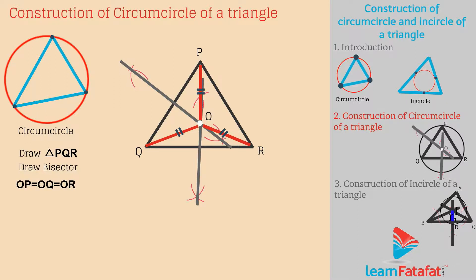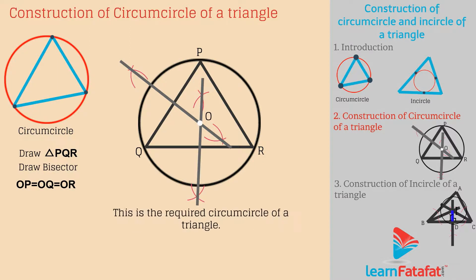That is, OP is equal to OQ is equal to OR. Place compass on point O. Extend it to point Q. Draw a circle with the current compass setting. This is the required circumcircle of a triangle.